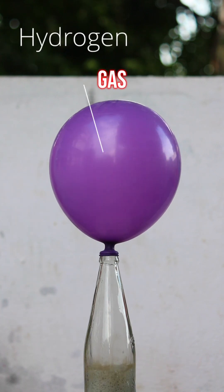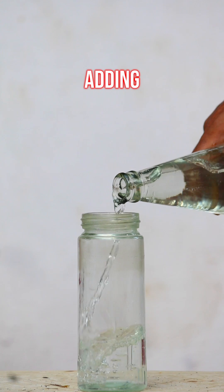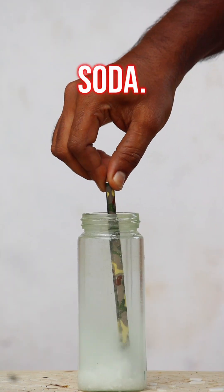Here is how you can generate hydrogen gas right at home. First, I'm taking a glass jar, adding water, and carefully mixing in some caustic soda.